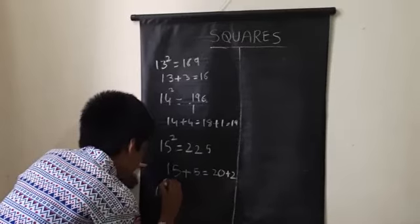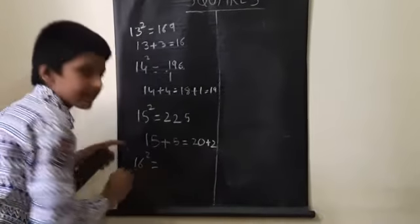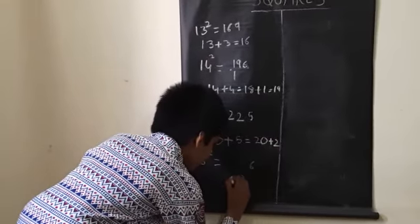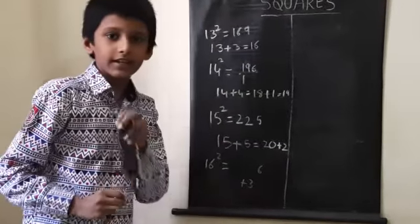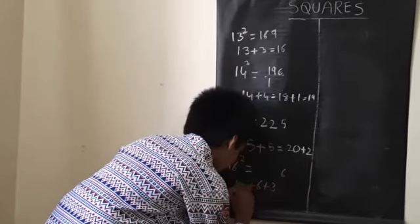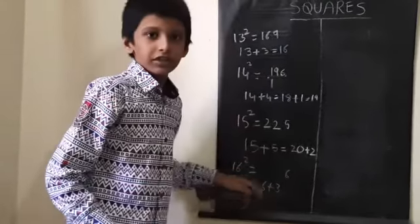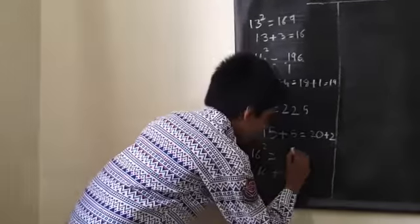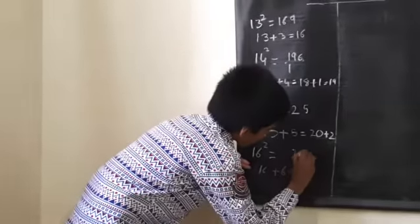Sixteen square. Six times six is thirty-six. How much more than ten? Six. Sixteen plus six: twenty-two. Twenty-two plus three, how much? Twenty-five.